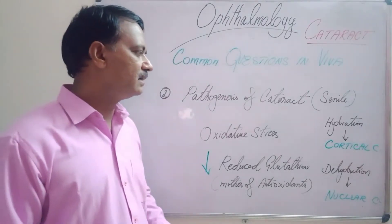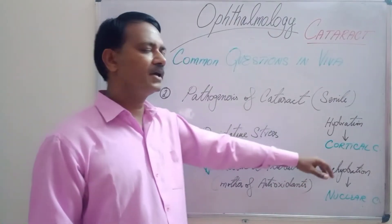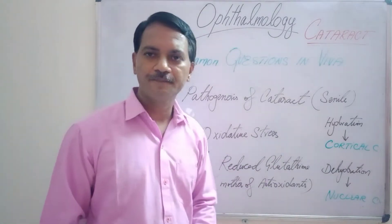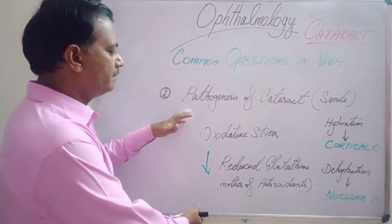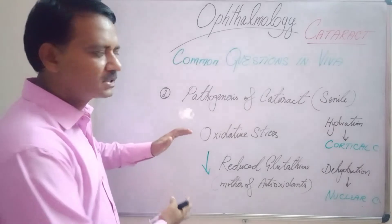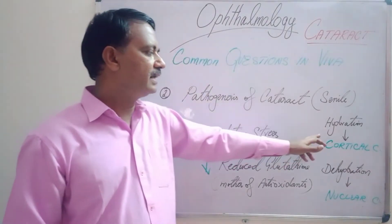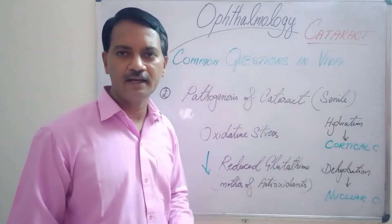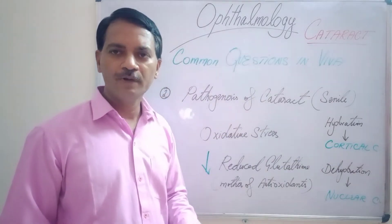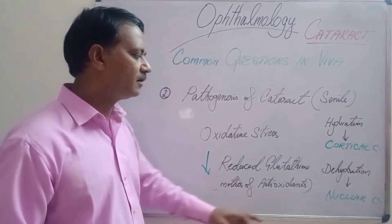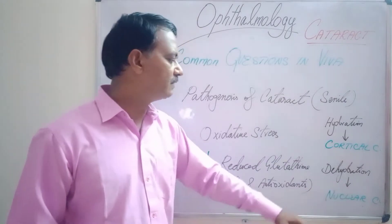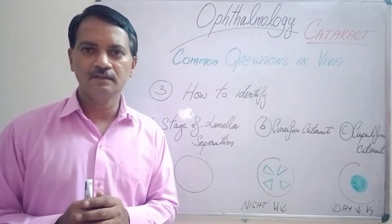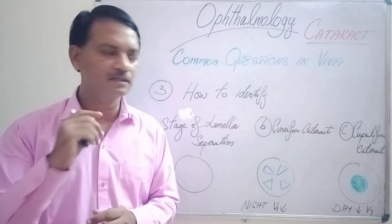You should be asking: why do you develop a cortical cataract versus a nuclear cataract? The process is going to be the same, but when this process occurs in case of a hydrated lens, that will lead to a cortical cataract. When this process occurs in case of dehydration, that will lead to a nuclear cataract.